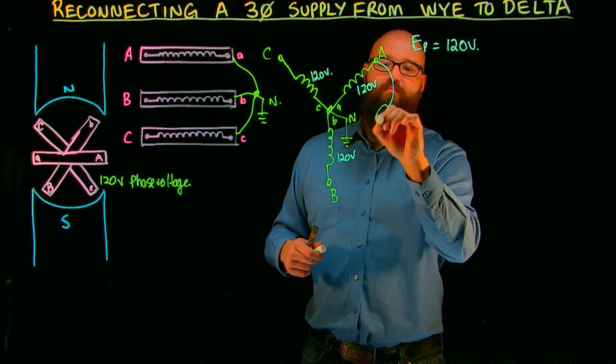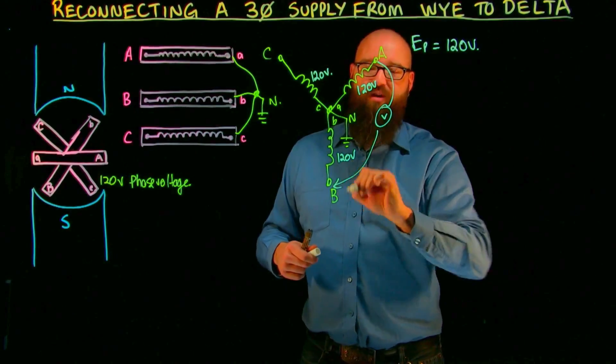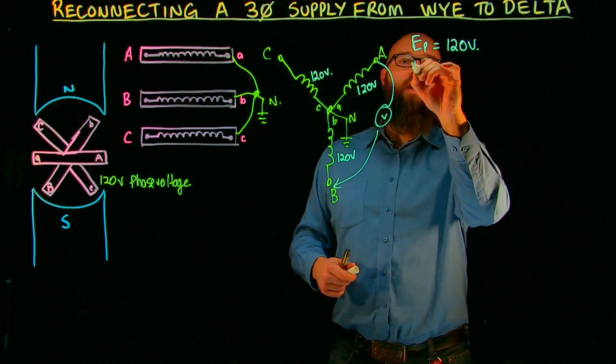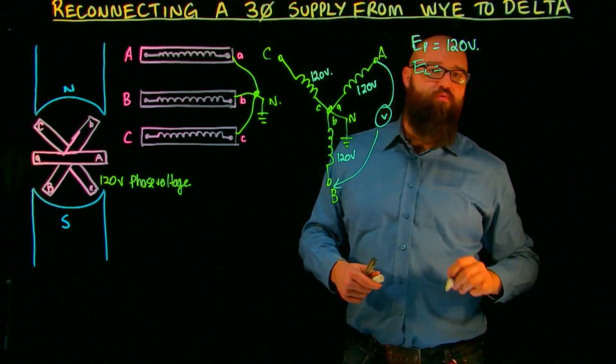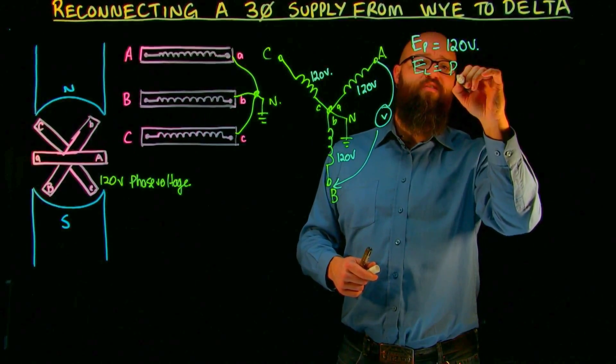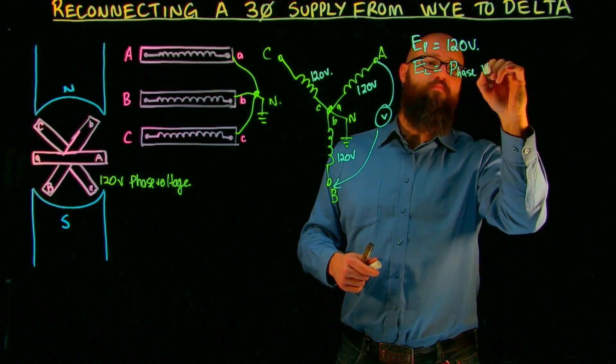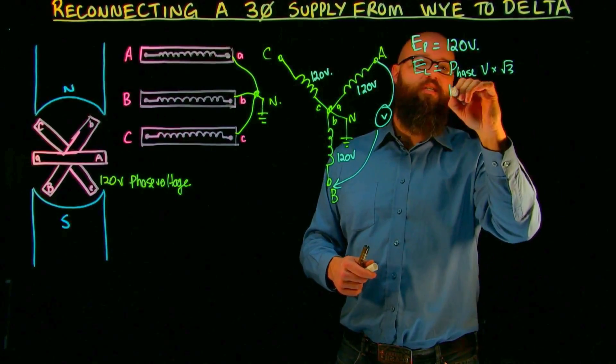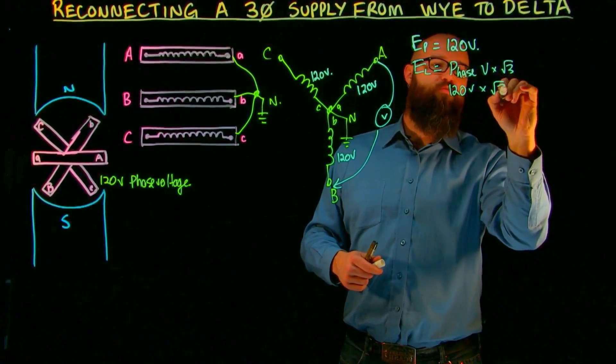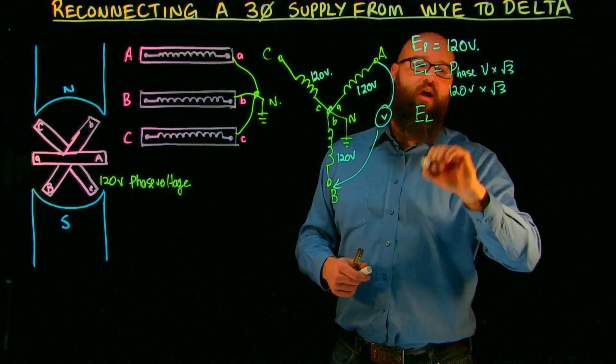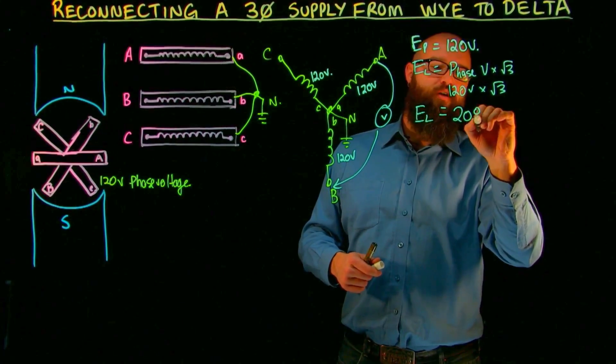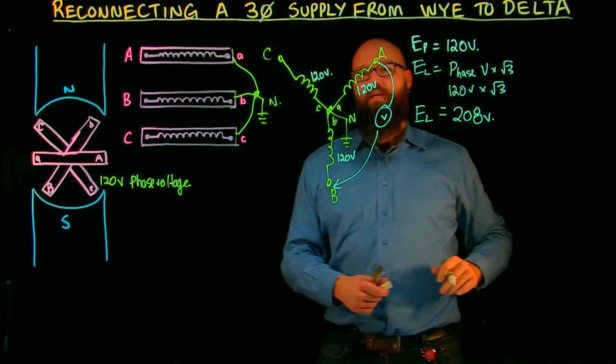We get the 120 volt phase voltage. And if I were to take a volt meter and measure line to line, my line voltage would actually be root 3 greater. It would be my phase voltage times root 3, or in this case 120 volts times root 3. My line voltage would be 208 volts.